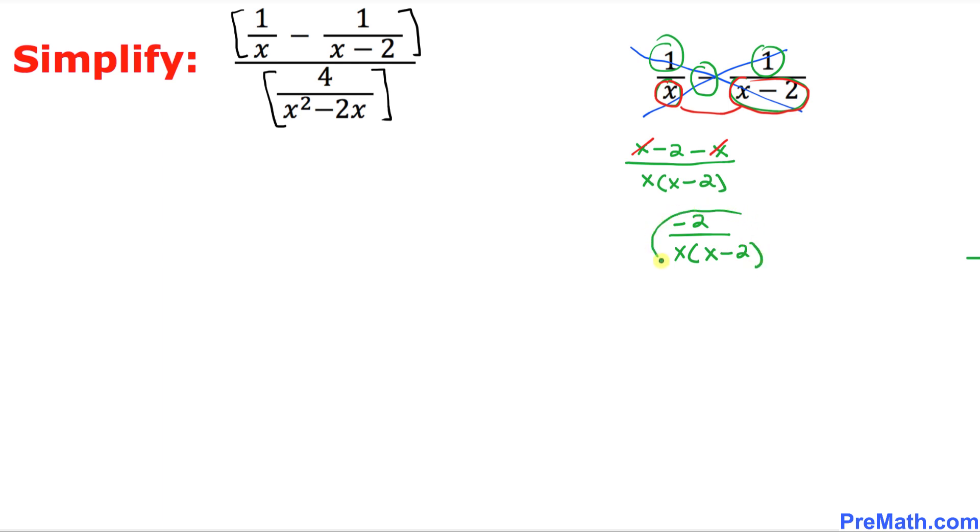So this is the simplified form of these two fractions, and now the numerator can be written as we simplified it to this part. So I can write the top part as negative two divided by x times x minus two, and divided by... we are going to take care of this part, the denominator.